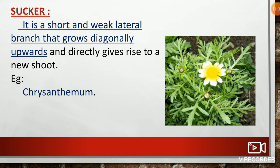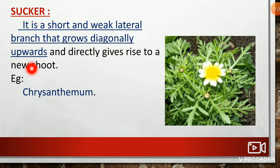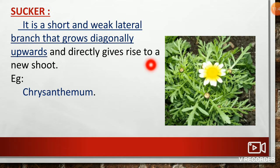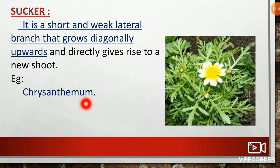Sucker is a short and weak lateral branch that grows diagonally upwards and directly gives rise to a new shoot. For example, chrysanthemum.